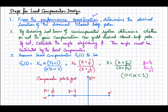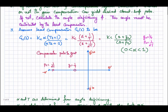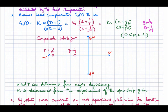By drawing the root locus of the uncompensated system, determine whether a gain compensator can yield the desired closed-loop poles. If not, calculate the angle deficiency — this angle must be contributed by the lead compensator. The lead compensator transfer function is given as Kc times (s + 1/τ) / (s + 1/ατ), where Kc defines the gain, the zero is at 1/τ, and the pole is at 1/ατ.